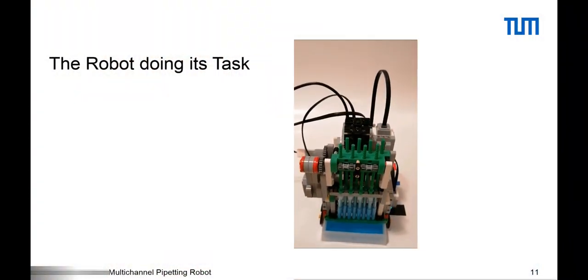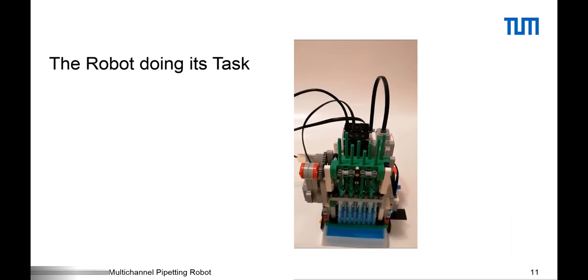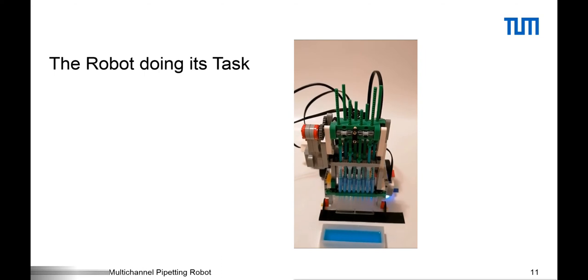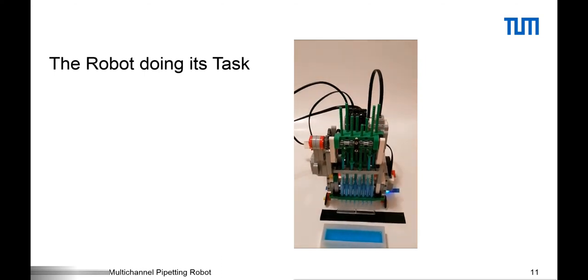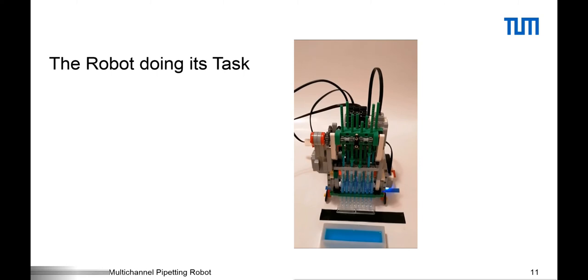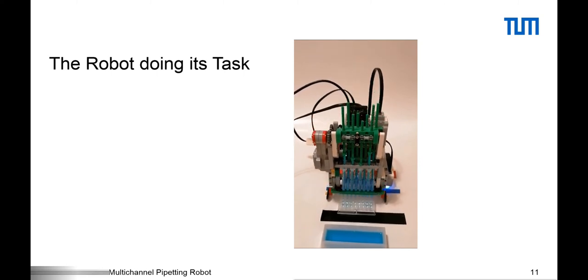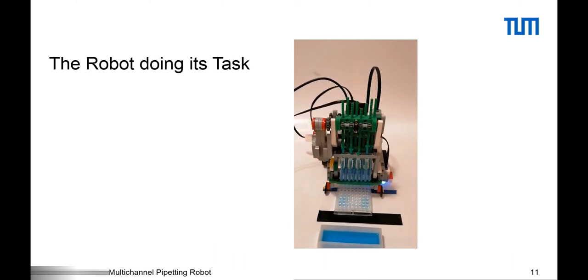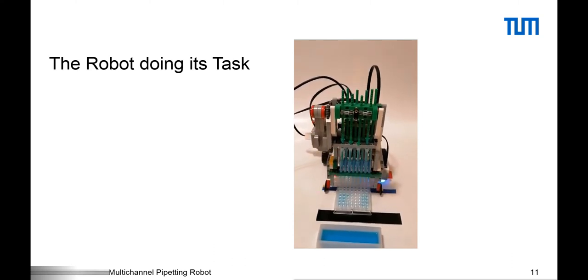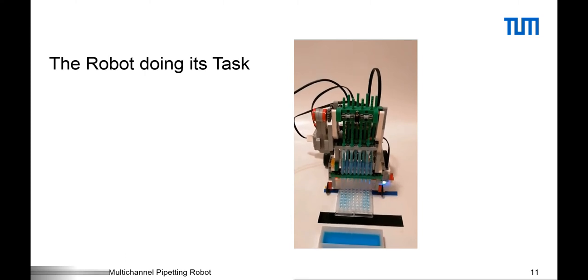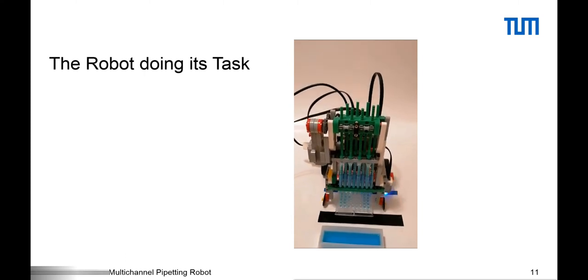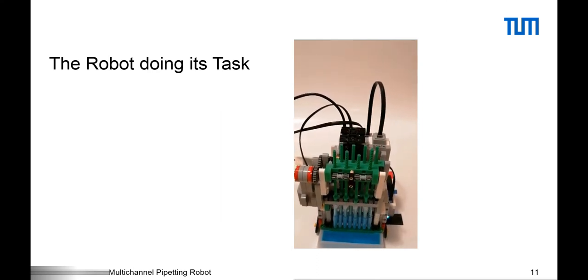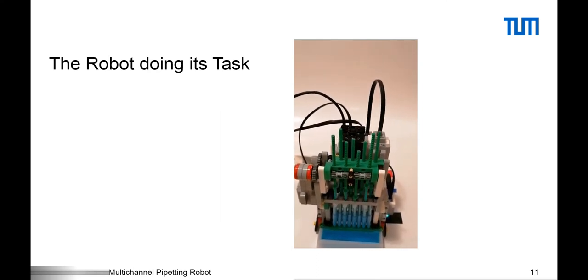This is a more elaborate model where you have eight syringes that can simultaneously pipet. What you see here is the robot pipetting into a 96-well plate. 96-well plates can be used for example to prepare a PCR reaction. PCR means polymerase chain reaction and you may know that from the context of coronavirus testing. That is basically the reaction that you use to identify if a person has the virus or not.